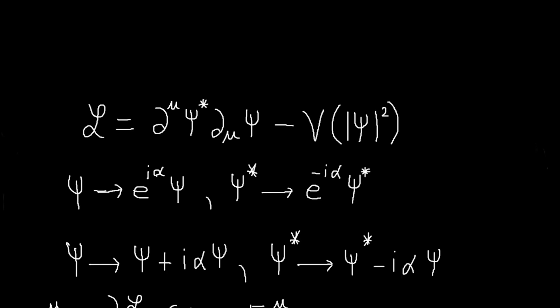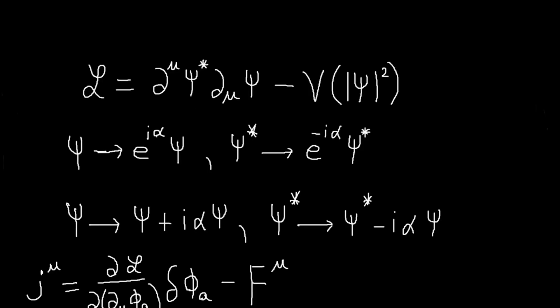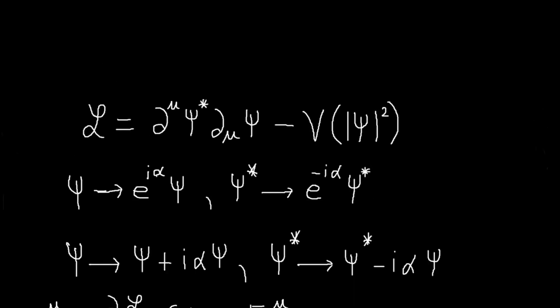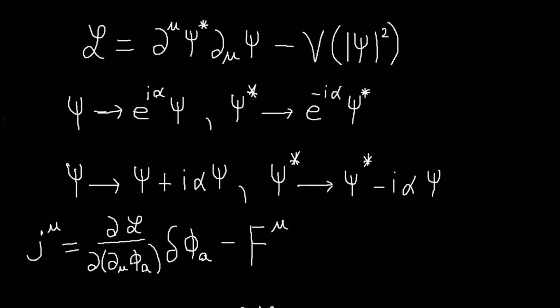And this is one minus i alpha for e to the minus i alpha. So we have this. And from these we can calculate our, so this is the formula we had for the conserved current.